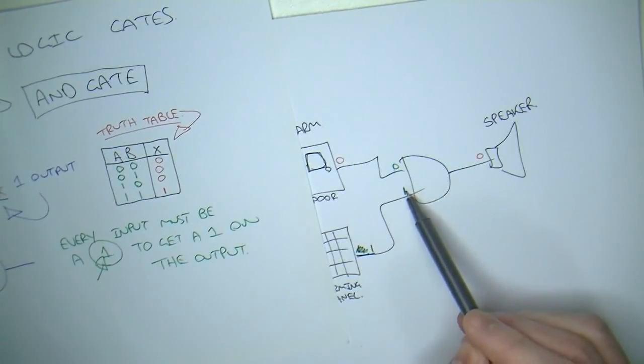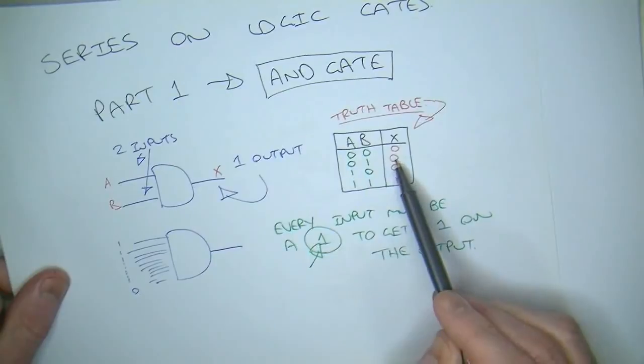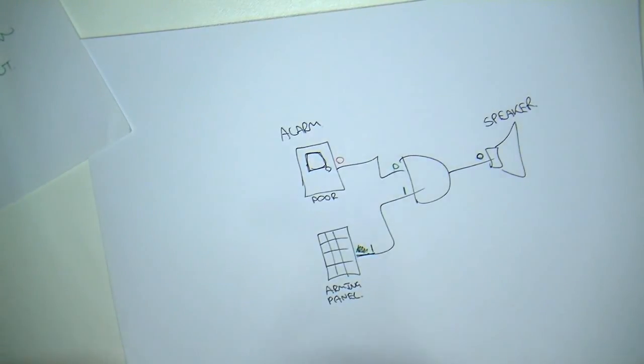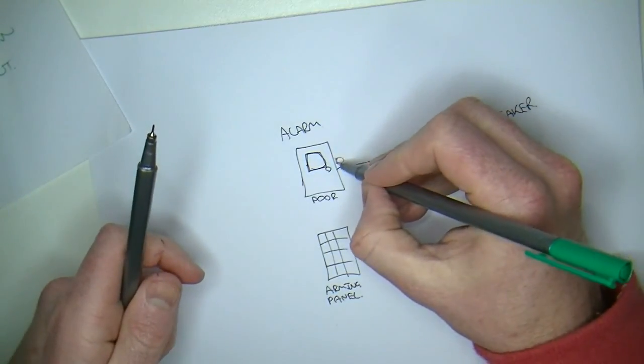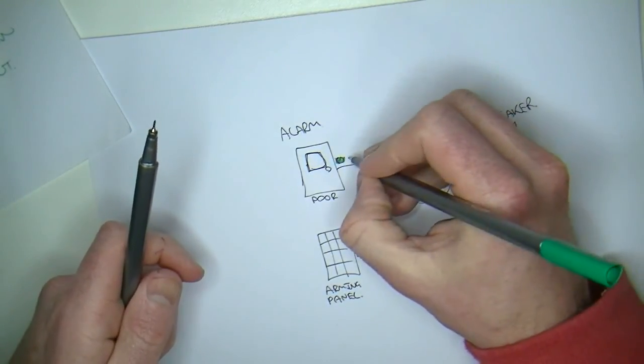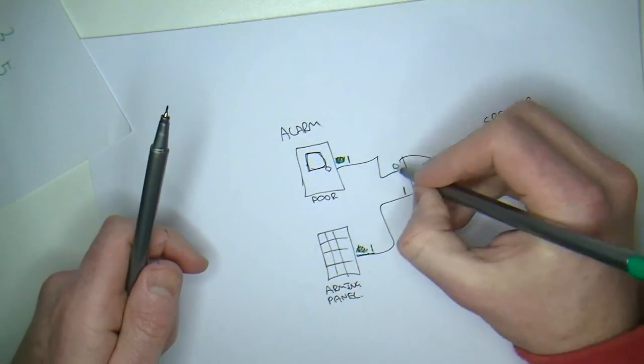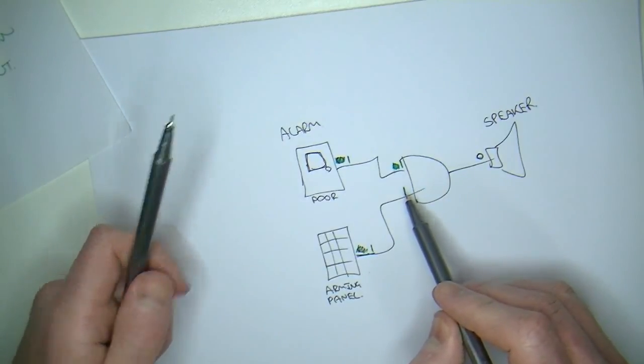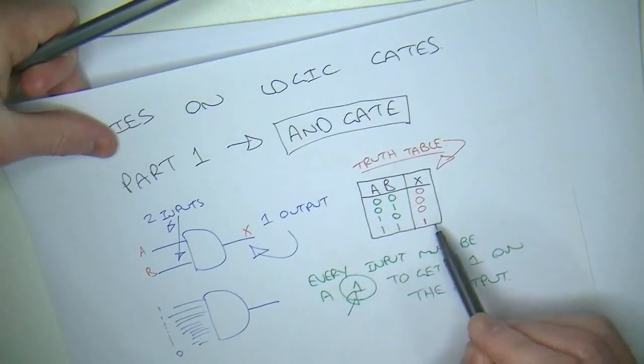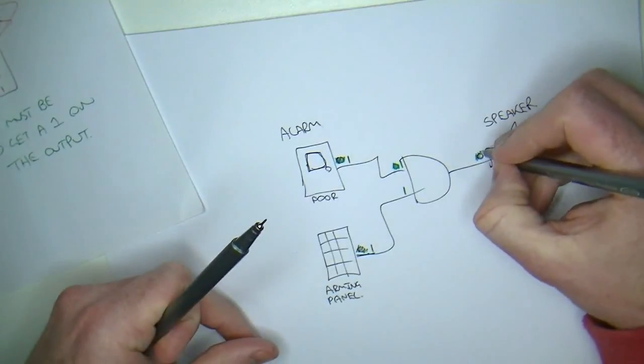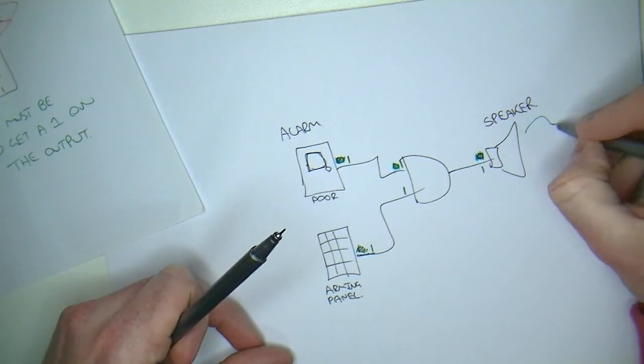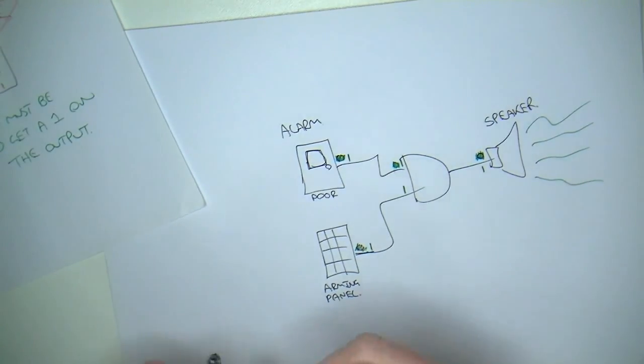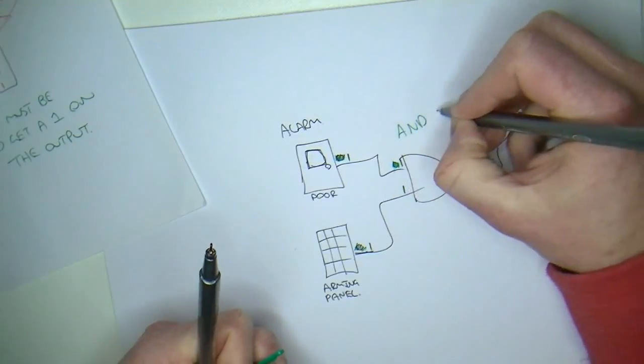Now, because nobody has come in through the door, we have a zero coming from the door sensor. So, again, coming back to this, the only time we'll get a one is when both inputs are a one. So, if we've got a zero and a one, zero and a one, we get a zero. So, still, the speaker is not making any noise. But then, if some guy tries to break in, we get a logic one at the door. That logic one appears here. So, now that we've got two ones, two ones will give us a one on the output. So, we will get a one coming through to the speaker and that will start making noise. So, that's a very basic application of where to use the AND gate.